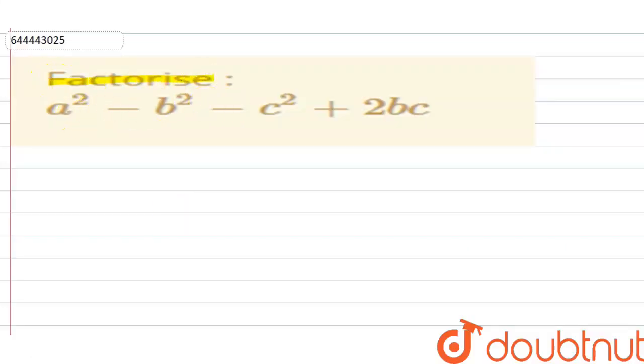So what we do is just separate this thing. This is a square. Now just take out this minus sign common, so this will be b square plus c square minus 2bc. Now this thing is the square of b minus c, so basically this thing can be written as a square minus (b minus c) whole square.